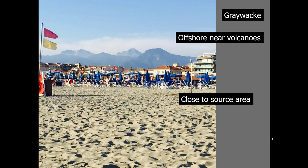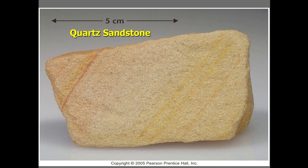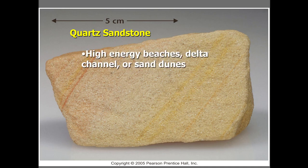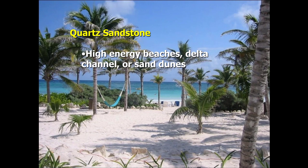Moving further away — say another hundred miles — we would find quartz sandstone. Quartz sandstone is a very well-sorted rock with well-rounded particles; it kind of even looks like the beach. Quartz sandstone can be found not just at the beach but in any high-energy environment where sediment has been transported a good distance from the source area — where the water is moving too fast for fine-grained particles like silt and clay to settle, so they get carried further into lower-energy environments.